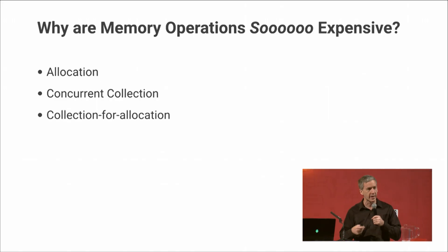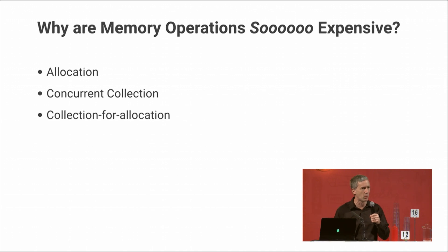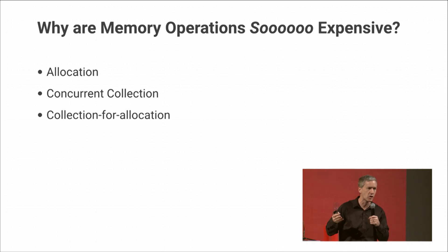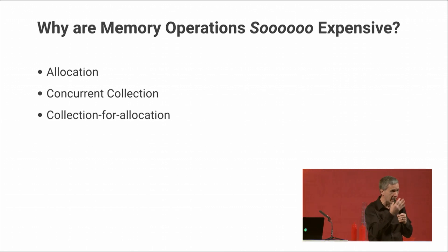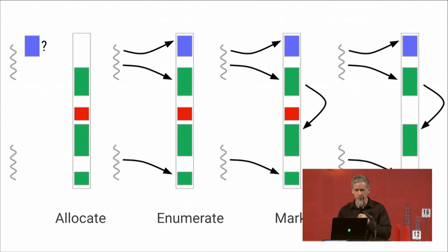There are three things that cause memory to be expensive in terms of performance on Android. One is the allocation — actually creating memory for new objects. The next is concurrent collection, or just collection in general, when we need to clear things out to make room for other allocations. The third, and most painful, is collection for allocation — commonly called GC for alloc — where you go to allocate something, there is no free space in the heap, and the garbage collector needs to run synchronously right then to free up enough memory.